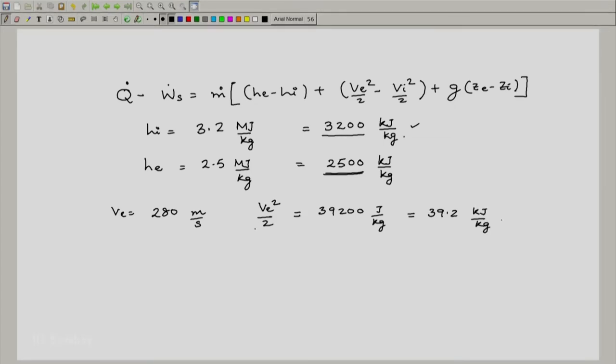And if I look at v_i, it is also reasonably high, around 170 meters per second. So v_i^2/2 is around 14.45 kilojoules per kg. This is significant. Any number which is reasonably above 1 kilojoule per kg, we will consider as reasonably significant.